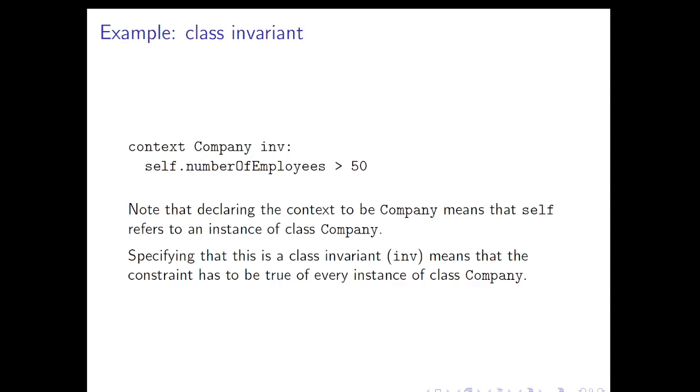Here's our first example of a typical use of OCL: to write a class invariant. Let's spend a bit of time with this simple example. The OCL expression itself here is self.numberOfEmployees greater than 50. The line before it, context Company, is telling us how to interpret that OCL expression. Declaring the context to be Company means that when we write self, either implicitly or explicitly in the OCL invariant, that refers to an instance of class Company. The inv part says that this is a class invariant, meaning that the following constraint has to be true of every instance of class Company.